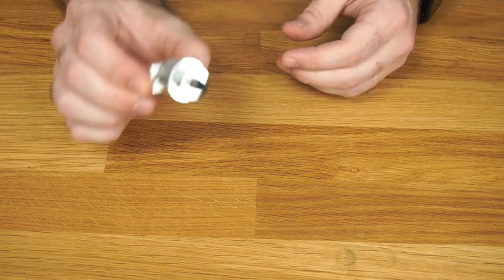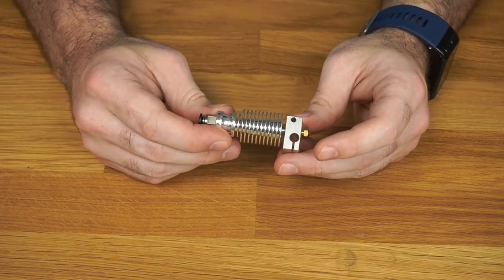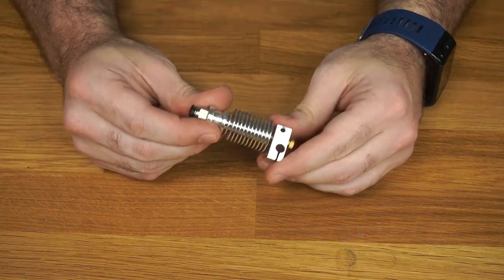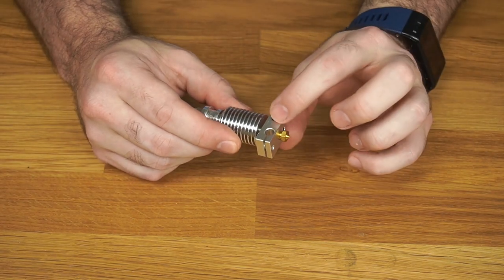And so now you're just left with your hotend. And so if this is brand new, chances are that this is all still loose, and you can take it apart. Otherwise, you're going to have to get a wrench and take the heater block off.